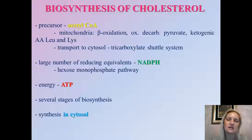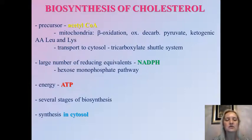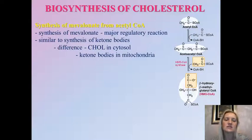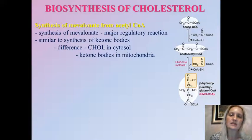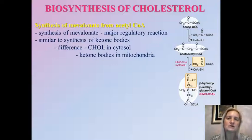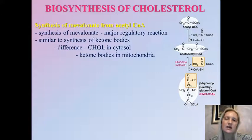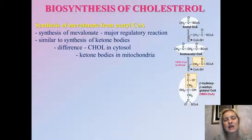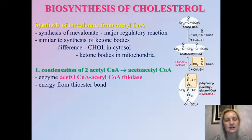The whole biosynthetic pathway occurs in the cytosol from the first to the last reaction, and there are several stages of biosynthesis. The first stage is synthesis of mevalonate from acetyl-CoA. This is the major regulatory stage of cholesterol biosynthesis, and it is very similar to the biosynthesis of ketone bodies — the difference being that cholesterol biosynthesis occurs in cytosol while ketone body biosynthesis occurs in mitochondria. The enzymes are the same but active in different compartments — they are isoenzyme forms. The first reaction is condensation of two molecules of acetyl-CoA.